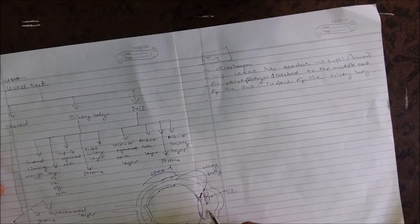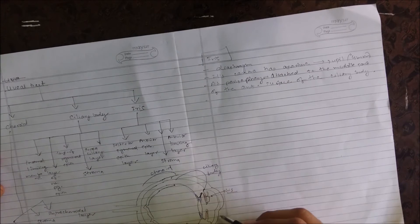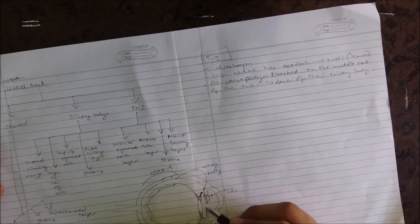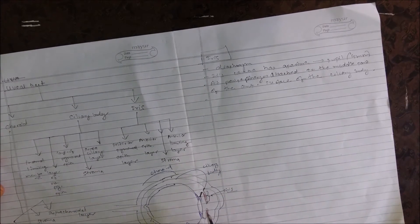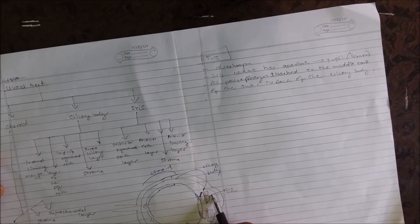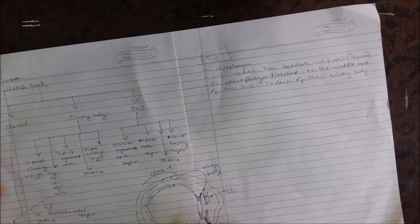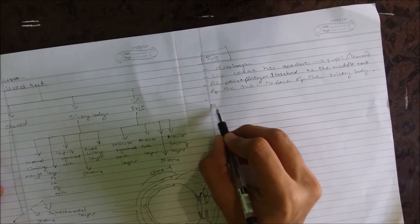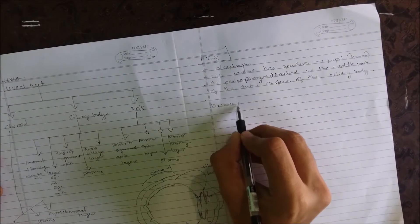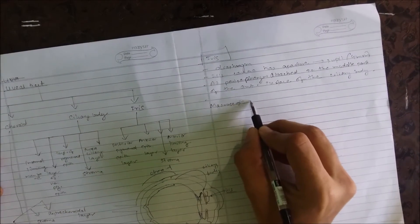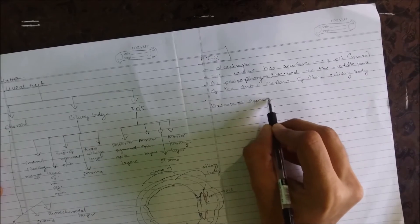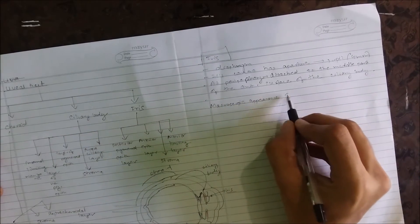The iris divides the space between the cornea and the lens into two parts, and the two spaces are called chambers: the anterior one is the anterior chamber and the posterior one is called the posterior chamber.